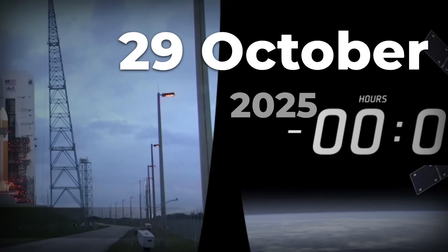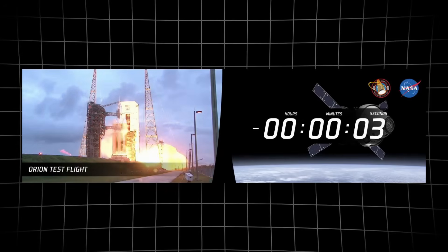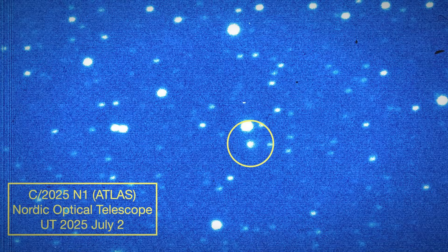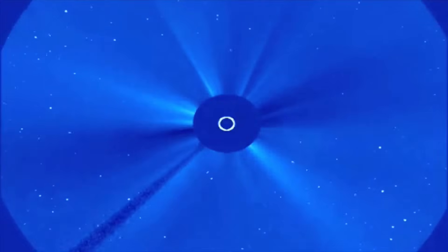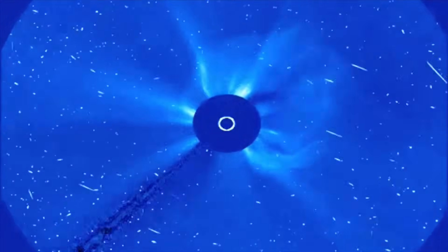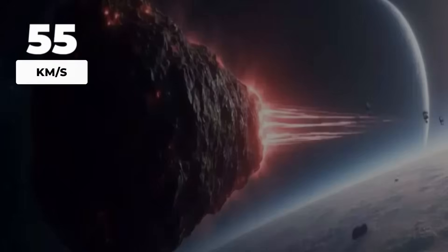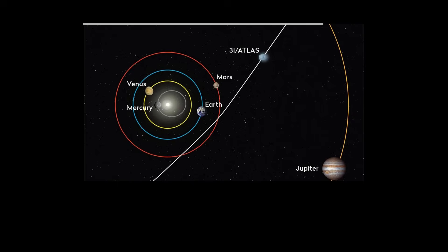October 29, 2025. The clock ticks toward perihelion, the moment 3i-Atlas draws closest to the sun. For hours, the object will vanish behind a wall of solar glare, completely invisible from Earth. No telescope on the ground can track it. At this point in its orbit, 3i-Atlas is moving at peak velocity, over 58 kilometers per second, hurtling through space faster than any planet. The geometry is unforgiving.